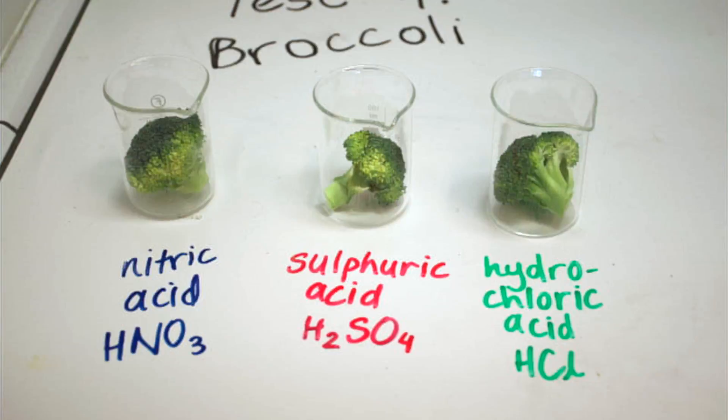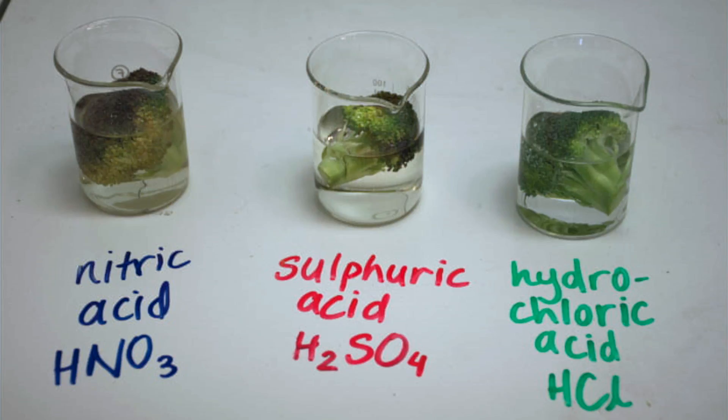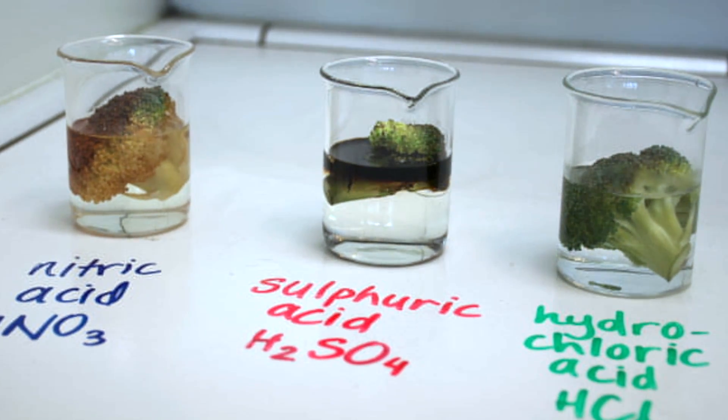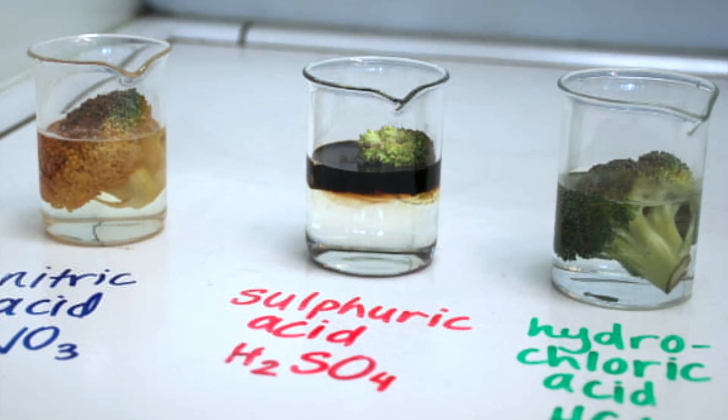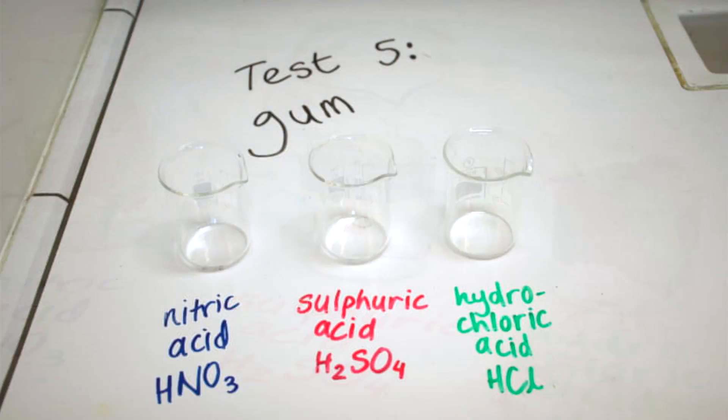We tested a different range of materials which we thought could be used to represent different parts of the body. The sausage represented flesh, muscle, and fat. The metals represented coins or other metals in the body, and the bone represented, well, bone.